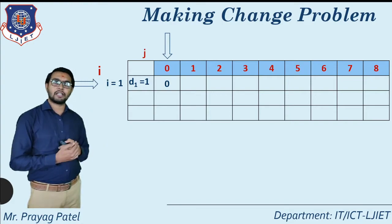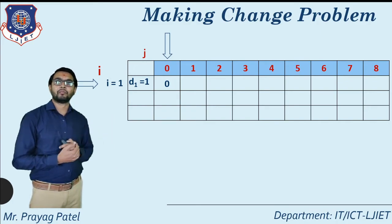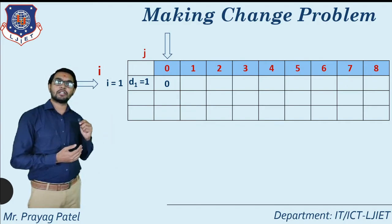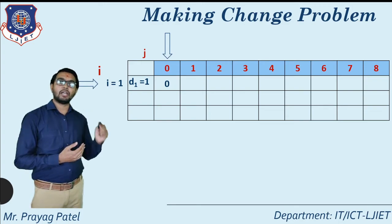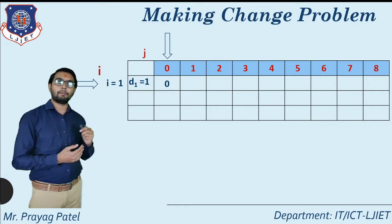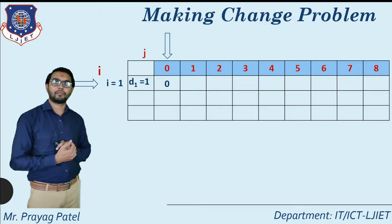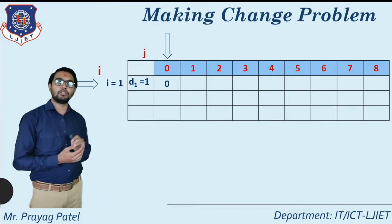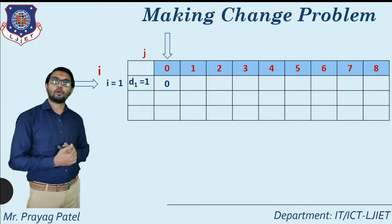If you want to find the change for 0, 1, 2, 3 up to 8, consider the appropriate column. Now at location C[1][0], column number 0 means only 0 money is required. So if you want to make change for 0, there is no need to select any coin. We put the value equal to 0 because for making change for 0, no coin is required.